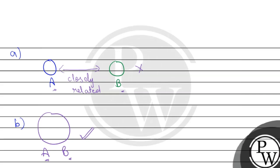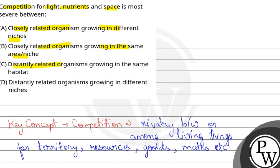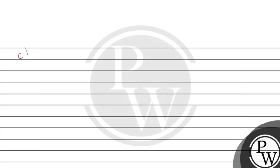Now let's see this. The other option is distantly related organisms, but it is the same habitat. Distantly related organisms. But they are different.